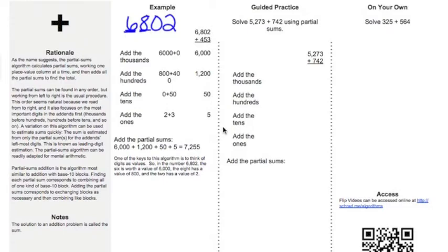And the 8 is worth 800. The 0 is actually still worth 0, 0 tens. And the 2 is worth 2. It's in the ones place. So when I work with this process, with this algorithm, it's important to know the value of each digit.